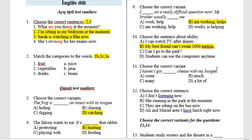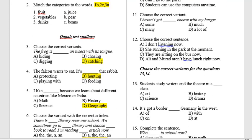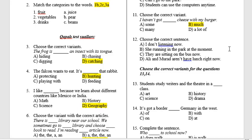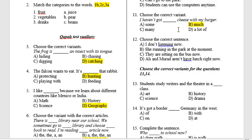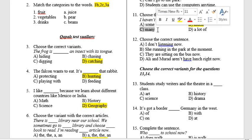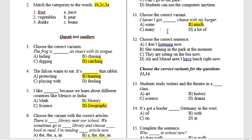Question 11: Choose the correct variant. B. 'I haven't got much cheese with my burger.' Variant A is incorrect because we never use 'some' in a negative sentence. C is incorrect because 'cheese' is not countable.